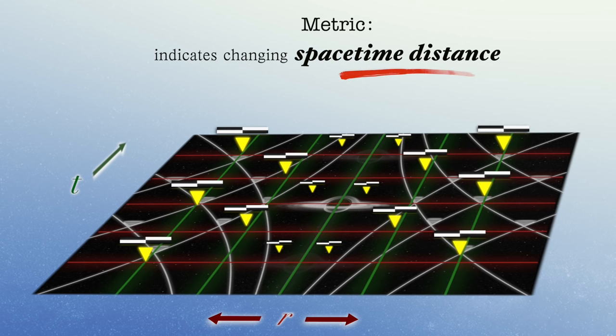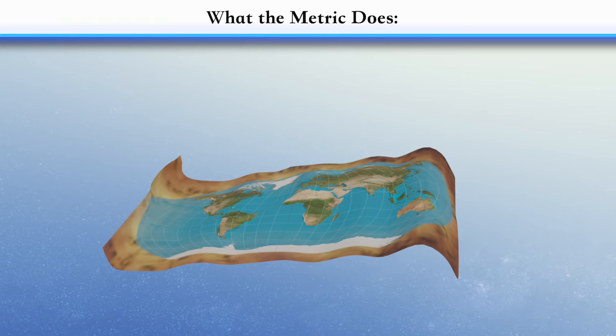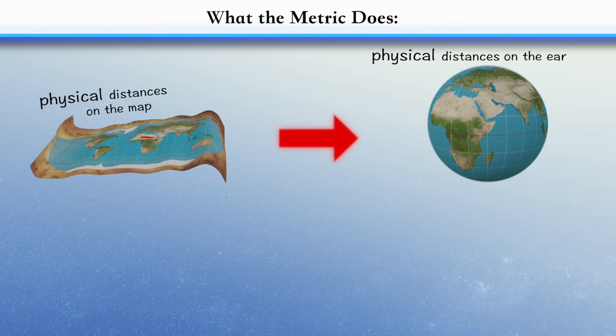This comparison is important, so we're going to reiterate it. On a regular map, a metric takes us from physical distances on the map to physical distances on the Earth at each and every point.